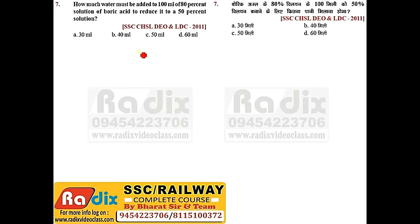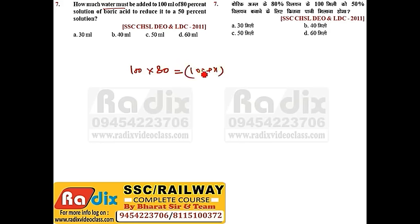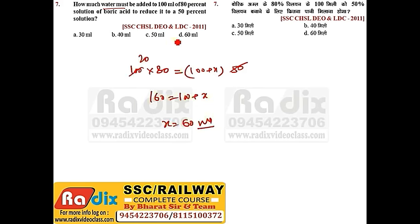Next question. How much water must be added to 100 ml of 80% boric acid solution to reduce it to 50%? The acid stays the same. So 100 × 80% = (100 + x) × 50%. This gives 160 = 100 + x, so x = 60 ml. Answer is option D.